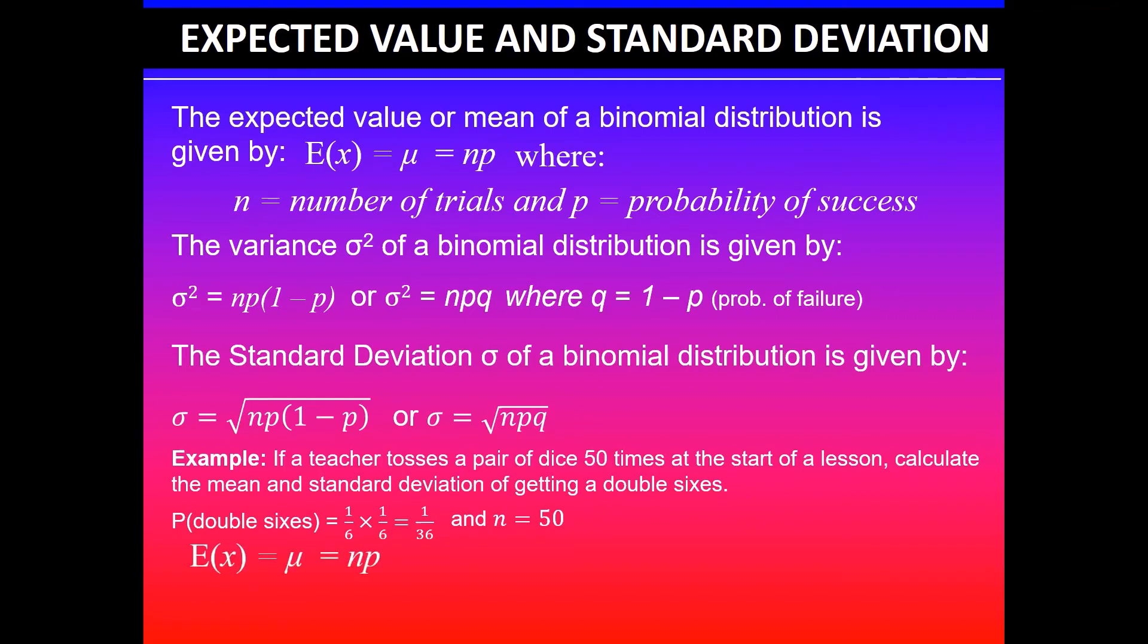The mean is given by μ = np, which is 50 × 1/36, which simplifies to 50/36, which is the same as 1.39 to two decimal places.